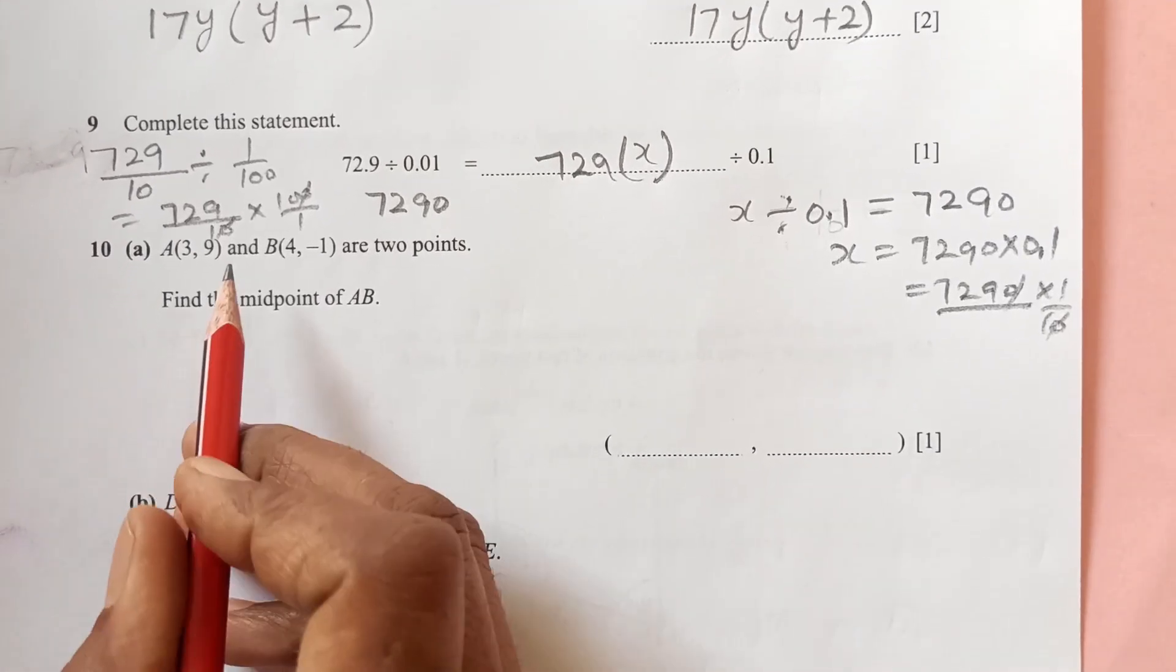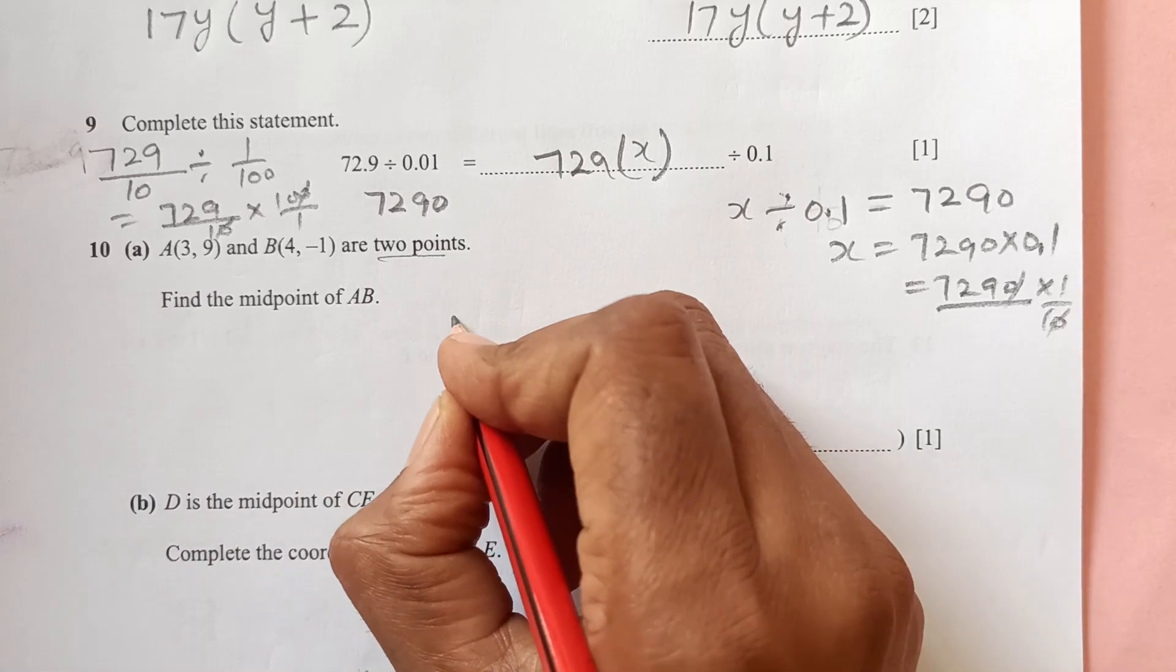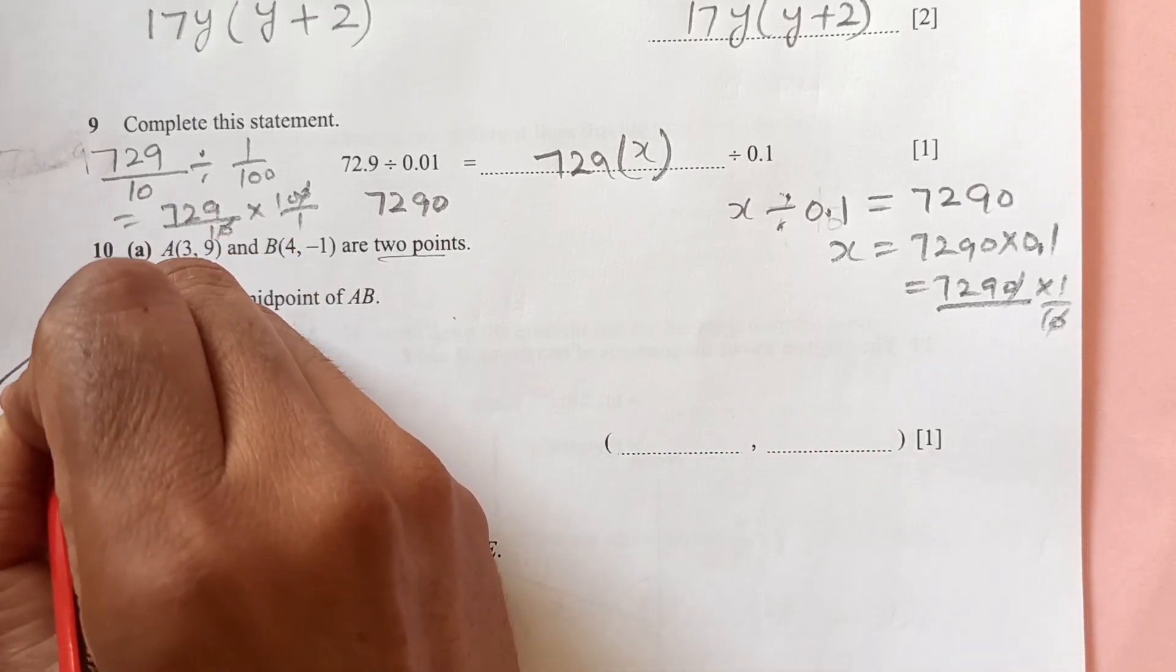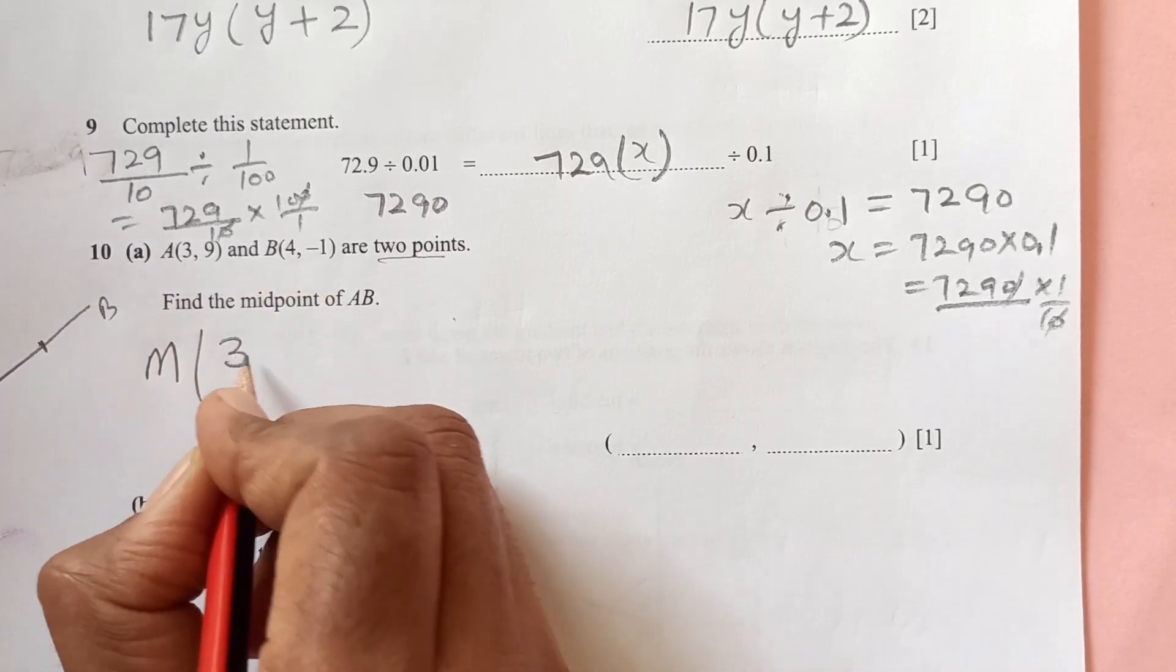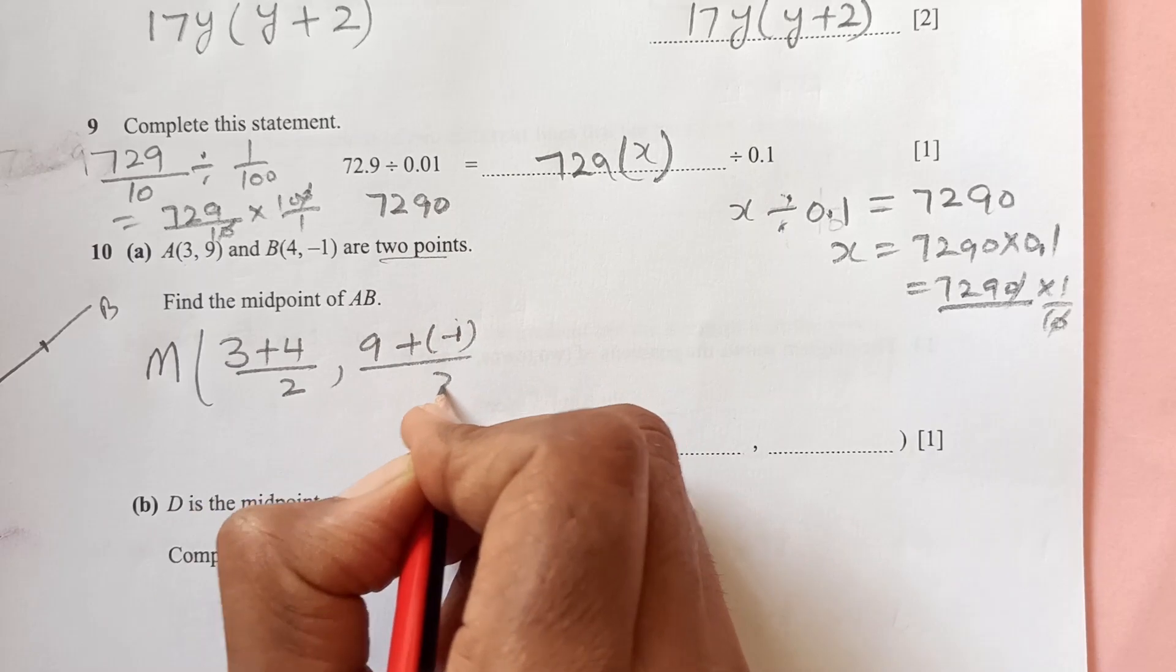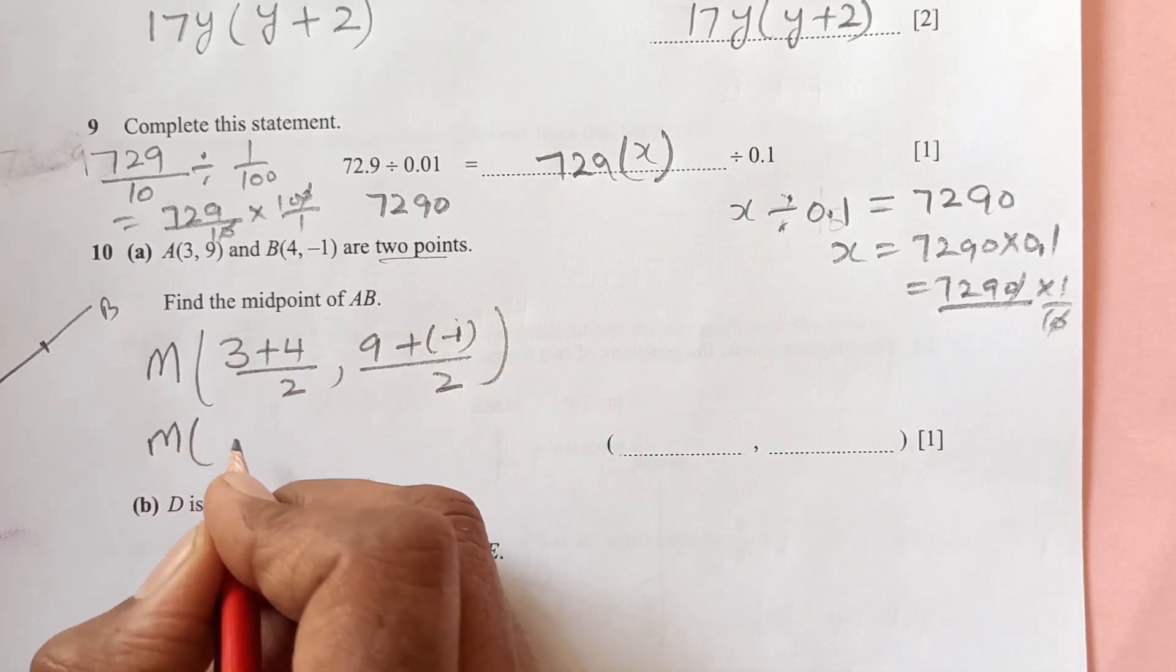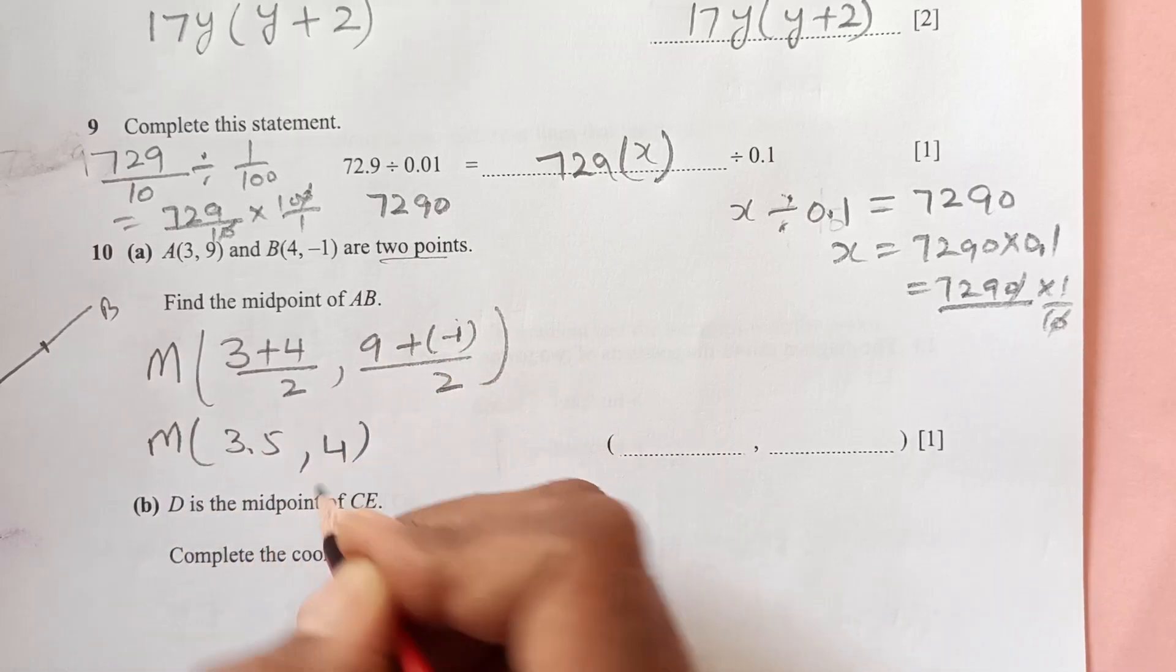Question number 10: A and B, you are given two points here. Find midpoint of AB. So A is here and B is here, midpoint is in the middle. Midpoint is we add x1 plus x2, that is 3 plus 4 over 2, then the other one 9 plus negative 1 over 2. So this is 7 over 2 is 3.5, 9 minus 1 is 8, 8 over 2 is 4. So midpoint is 3.5 and 4.